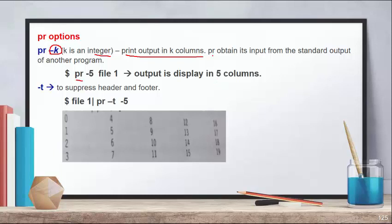The PR command can also obtain input from the standard output of another program. Whatever number of columns you want your output in, you write that number with the -K option, followed by the file name.